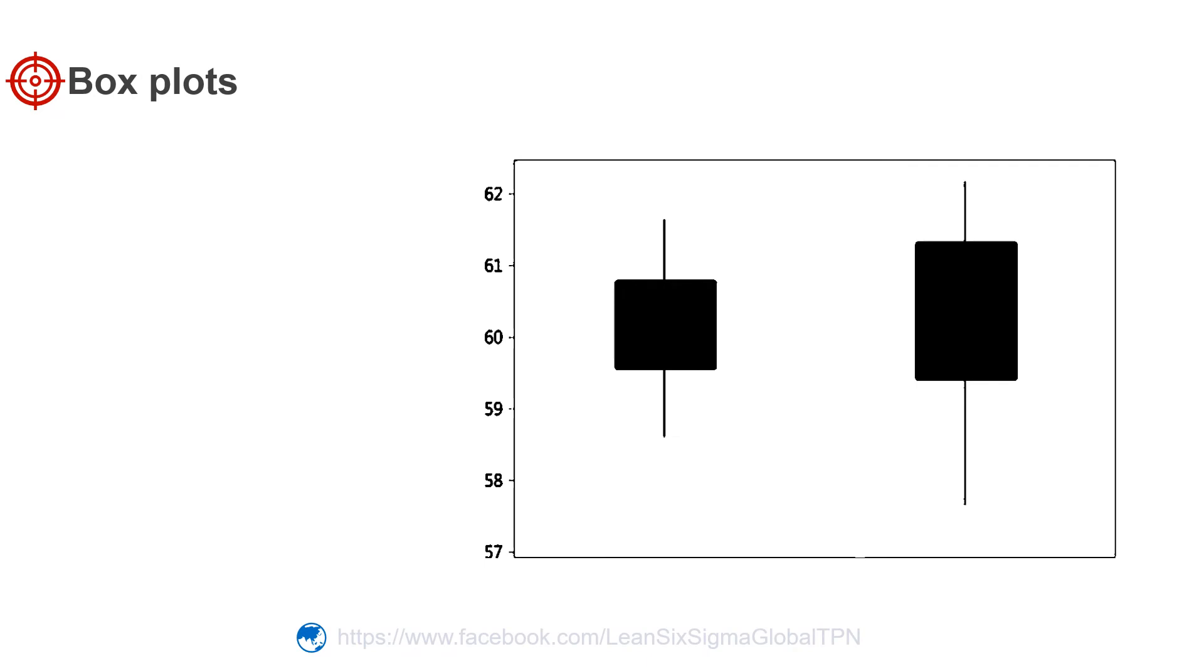For example, these are box plots of diameter values of circles for Line 1 and Line 2. According to the box plots, which line produces the circles with more variable diameters? We can see here Line 2 values span a wider range than Line 1, indicating that the Line 2 diameters are more variable.